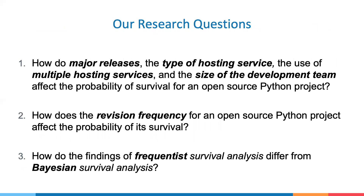In our study, we aim to explore the effects of certain attributes on the survival probability of open source projects. We study the same attributes as the original authors, namely: whether the project made major releases, where the project was hosted, if the project used multiple hosting services, and the size of the developer team. We also looked at the revision frequency for our project. And finally, we wish to compare the traditional frequentist approach to survival analysis with that of the Bayesian approach.